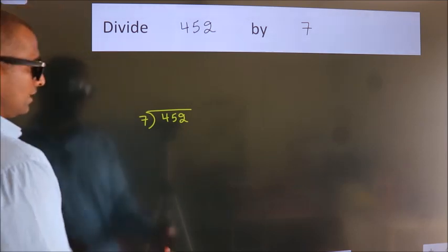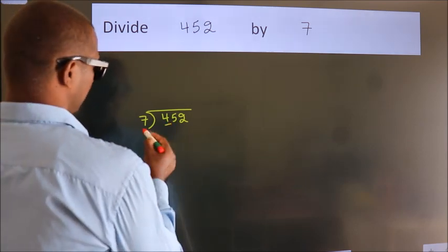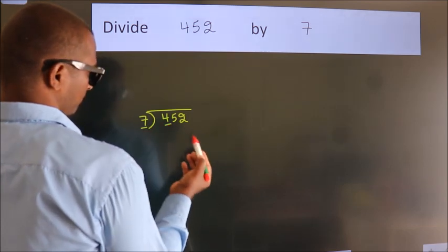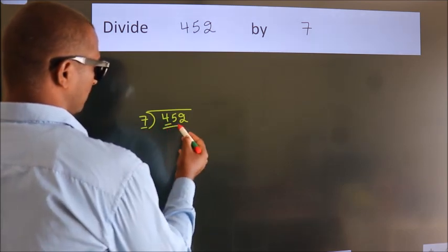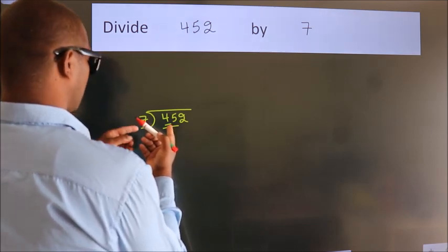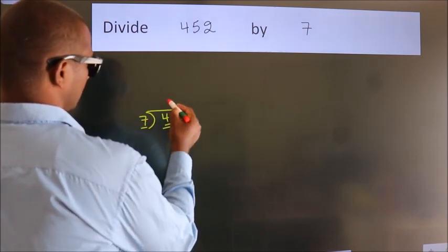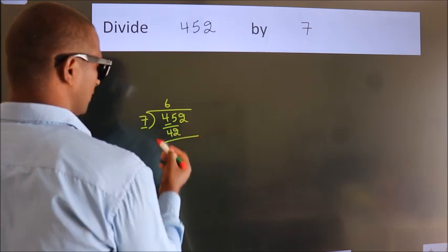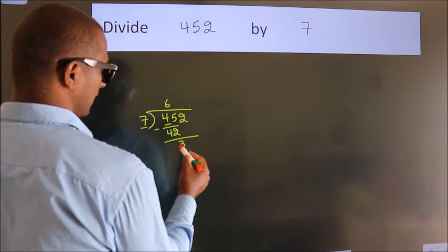Next, here we have 4, here 7. 4 is smaller than 7, so we should take two numbers: 45. A number close to 45 in the 7 table is 7 times 6, which is 42. Now we should subtract. We get 3.